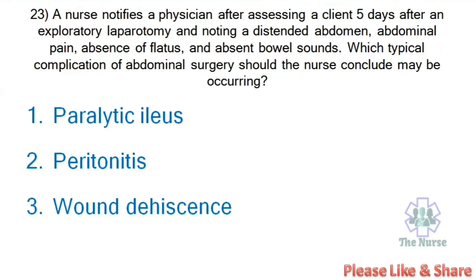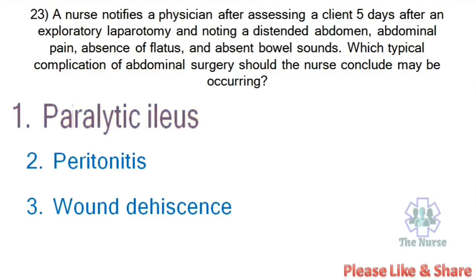Next question: A nurse notifies a physician after assessing a client five days after an exploratory laparotomy, noting a distended abdomen, abdominal pain, absence of flatus, and absent bowel sounds. Which typical complication of abdominal surgery should the nurse conclude may be occurring? Options: Paralytic ileus, peritonitis, wound dehiscence. Correct answer: Paralytic ileus.